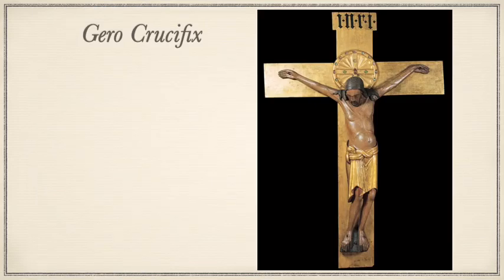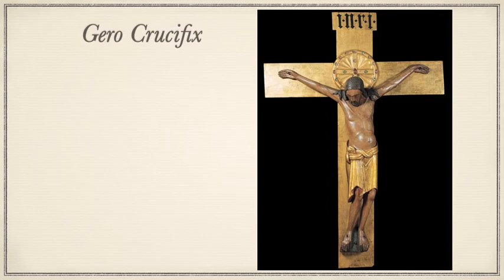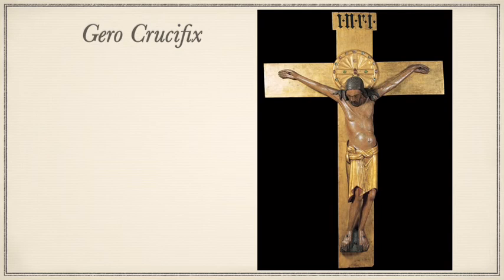In the Ottonian period, interest in freestanding statuary was revived. We see this in the Gero Crucifix in the Cologne Cathedral, Cologne, Germany, circa 970 — painted wood, with the figure at six feet two inches, showing it is a large work. This shows a concept of Christ dramatically different from Carolingian works — much more Byzantine in nature. Here we see a suffering Jesus with strong emotional appeal: blood runs down his face, his eyes are closed, his face is contorted in pain, his body sags under its weight, and the muscles seem stretched to the limit. It is considered the most powerful characterization of intense agony from the early Middle Ages.